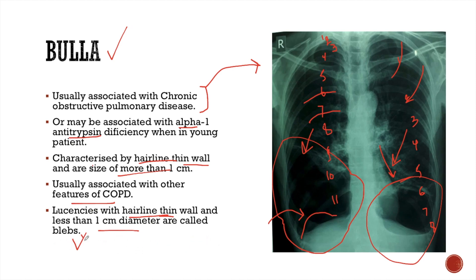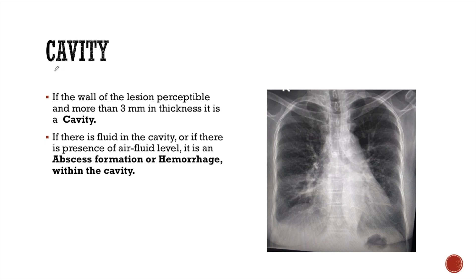Blebs are also associated with chronic obstructive pulmonary disease. Now, coming to cavity: if the wall of the lesion is perceptible and is more than 3 mm in thickness, then it is known as a cavity. In this X-ray, we can see a lucent lesion in the right middle zone which has a perceptible wall, and this wall is more than 3 mm in thickness — so this is a cavity.